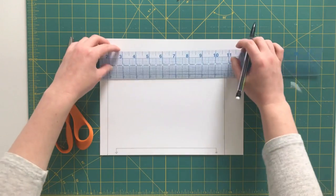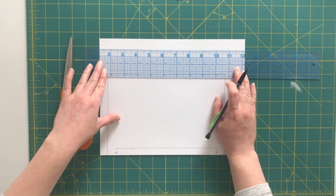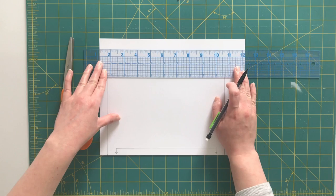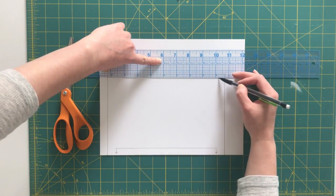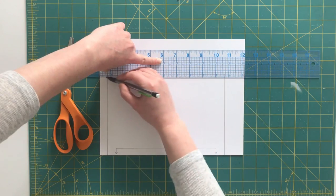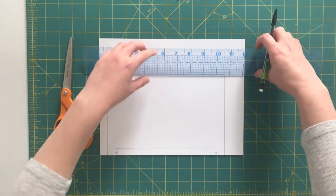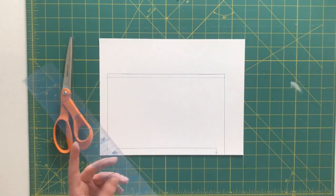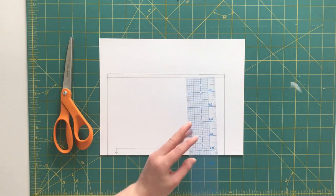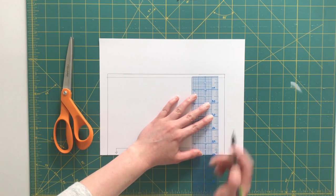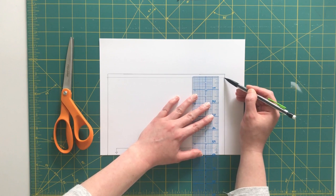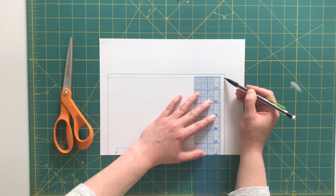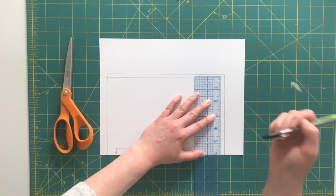Now I'm going to use a quarter inch seam allowance so I'm going to mark that as well and this is going to help me mark where my pleats need to be. So there's my quarter of an inch seam allowance along that side and now it's time to start marking my pleats. I'm going to line the eighth of an inch line up with my quarter inch seam allowance line and this is going to give me the most evenly spaced pleats in the easiest way possible.